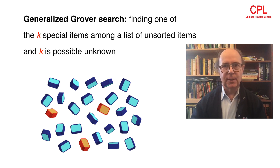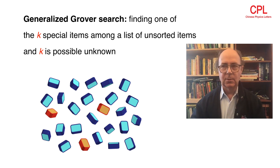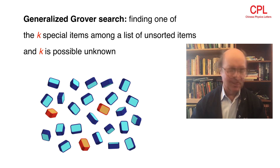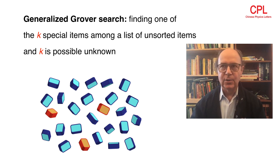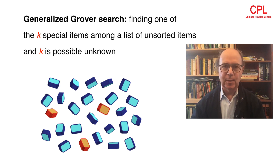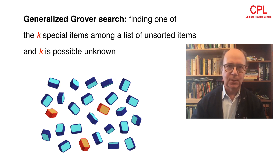But the real fun comes when you generalize the Grover problem to a slightly more complicated problem in which there are an unknown number — call it k — of items that are special, or in physical terms,